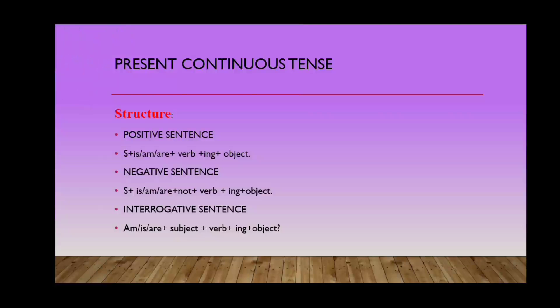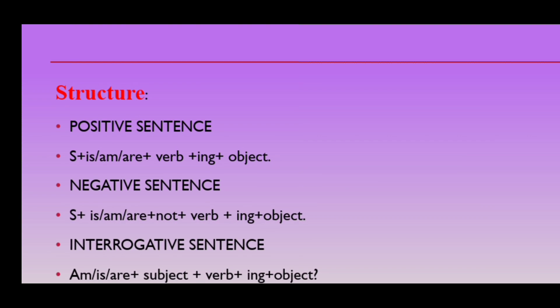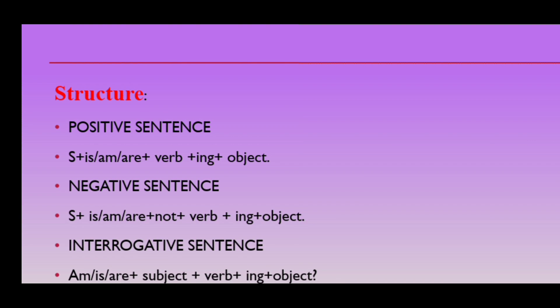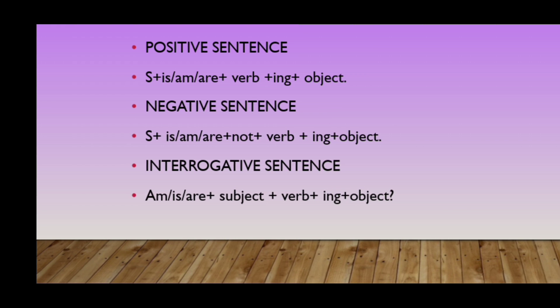Now the next one is present continuous tense. The structure for an affirmative sentence is: subject plus is, am, or are plus verb plus ing plus object. For a negative sentence: subject plus is, am, or are plus not plus verb plus ing plus object. For an interrogative sentence: is, am, or are plus subject plus verb plus ing plus object and a question mark.